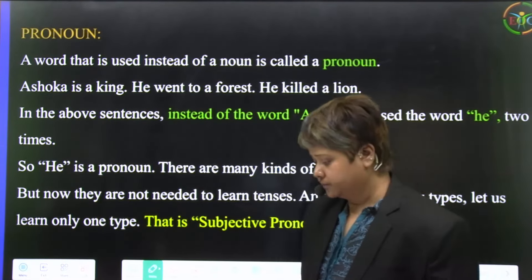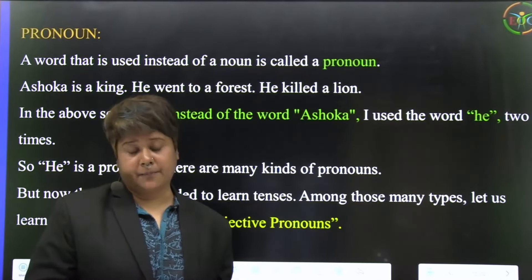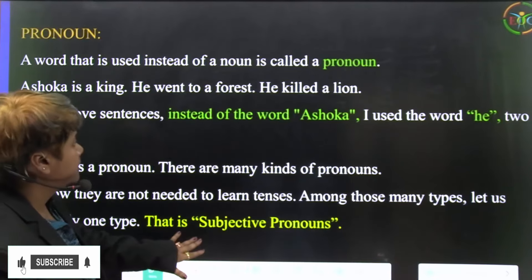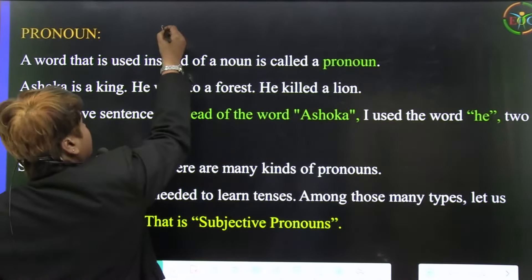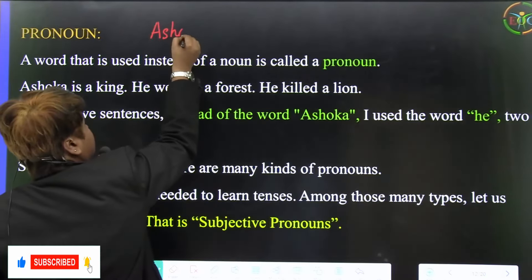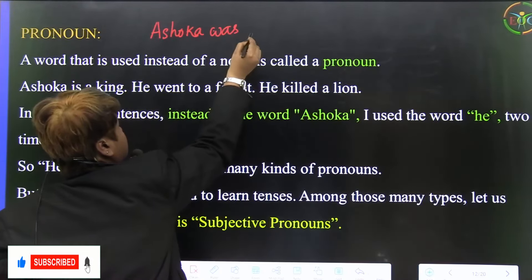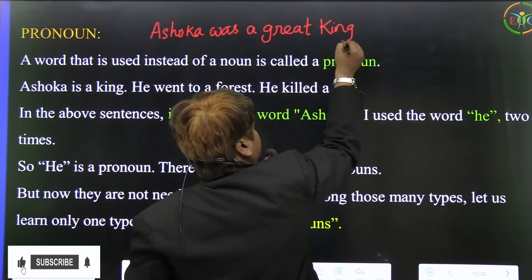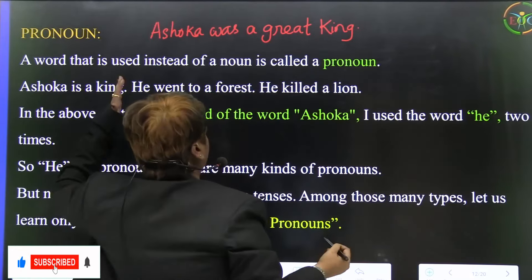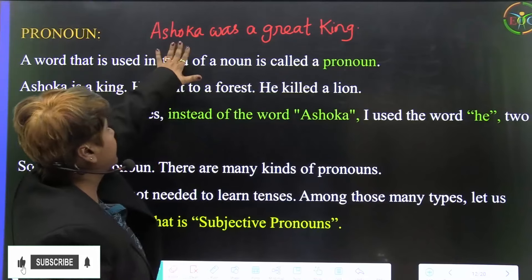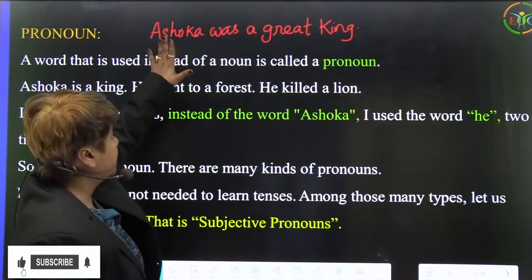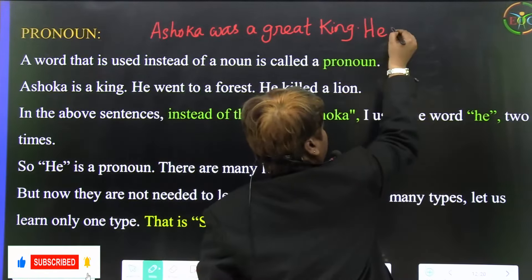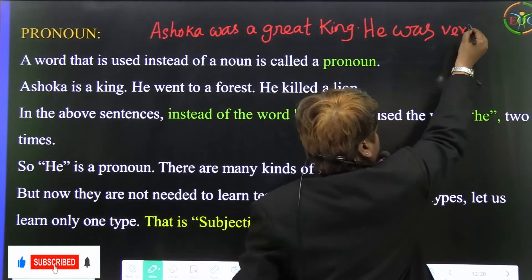The next topic is pronoun. What is pronoun? A pronoun is used in place of a noun. For example, suppose Ashoka was a great king. Here, Ashoka is the naming word — Ashoka is a noun. Now, if we are writing an essay about Ashoka, like 'he was very kind', we use 'he' in place of Ashoka.